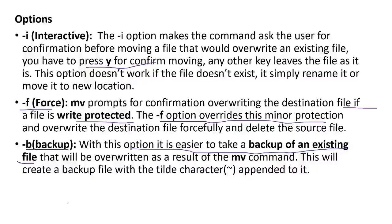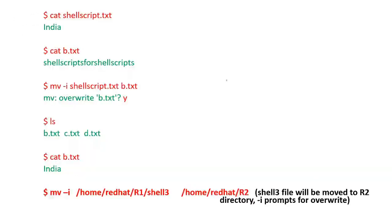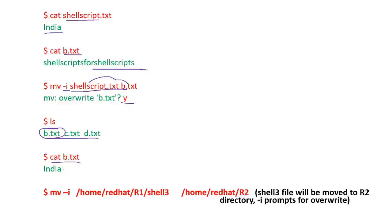The backup option will append something to the original file before it is moved. You can see the various examples. So the contents of shell script file are moved to b.txt. Before moving, it is going to check. After the move, the contents that were present in the shell script file are now present in b.txt.